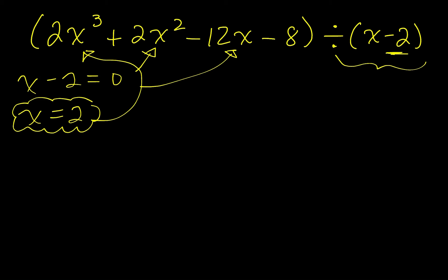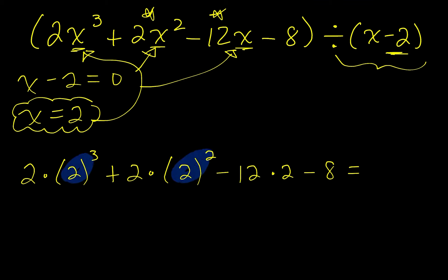So here we go. We're going to say 2 times the value of x is 2 to the third power. All I'm doing is substituting what x is here plus 2 times the value of x, which is 2, 2 to the second power. Now we're going to do minus 12 times 2 minus 8. We need to look at our exponents first here. We're going to evaluate the exponents. 2 to the third power, 2 times 2 is 4, times 2 is 8. Plus 2 to the second power is 4.